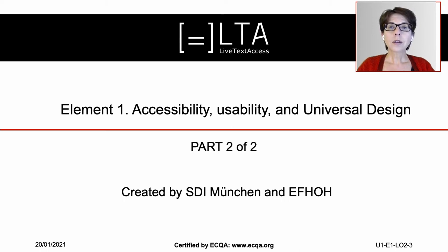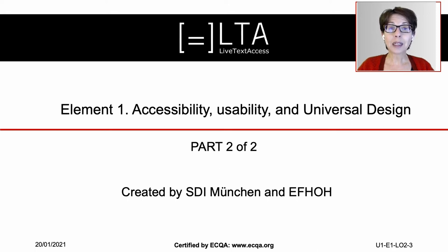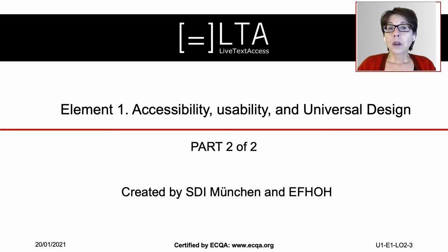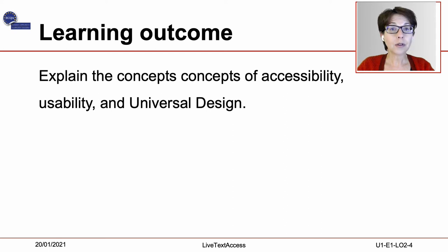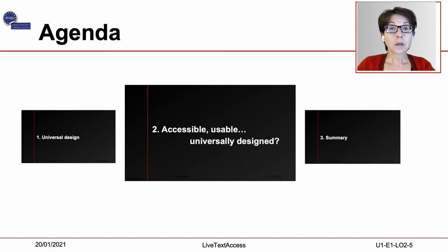In Part 1, we talked about universal design. Here, in Part 2, we will define the terms accessibility and usability. My name is Rocío Bernabé Caro from the Internationale Hochschule in München, Germany. I have prepared this video lecture in collaboration with Fiero Cavallo and the European Federation of Hard of Hearing, in short, EFHO. On completion of this training sequence, you will be able to explain the concepts and the differences between usability, accessibility and universal design.